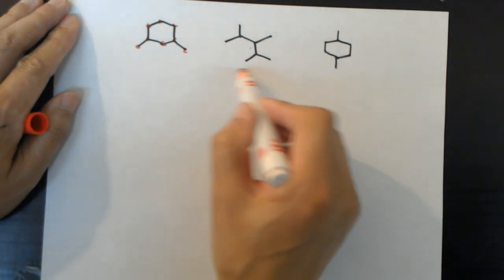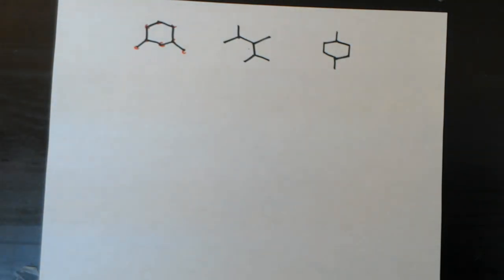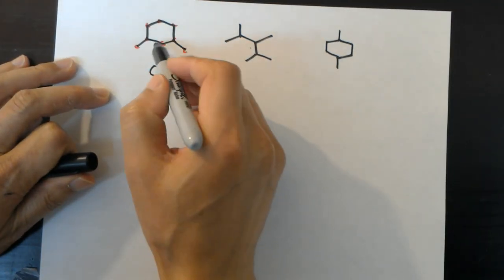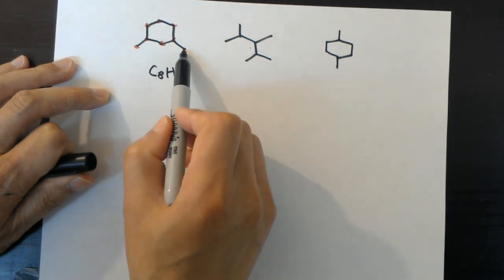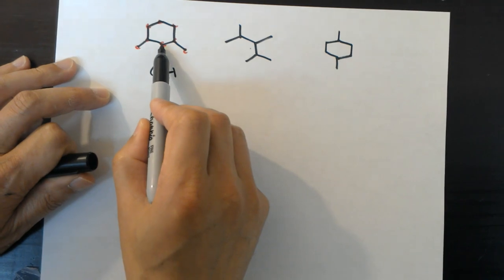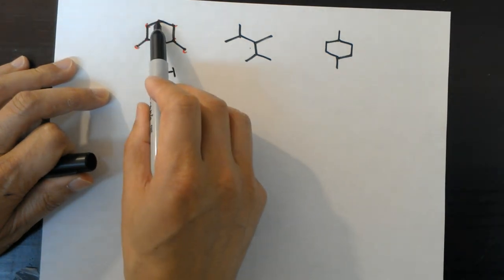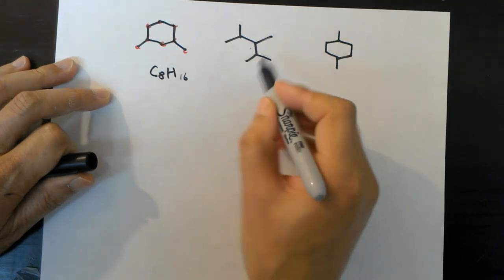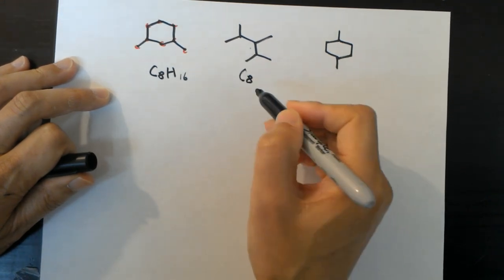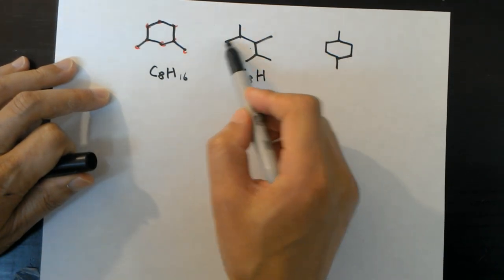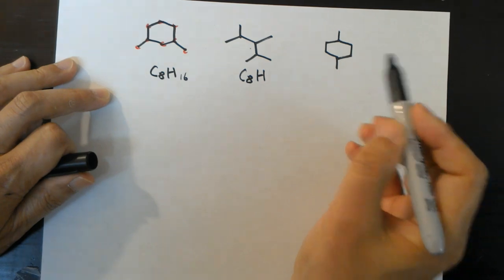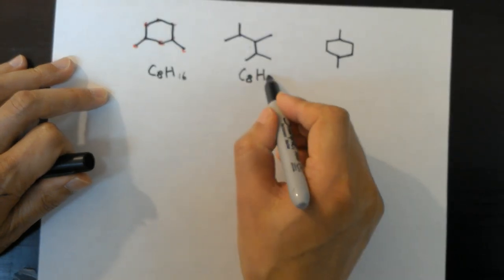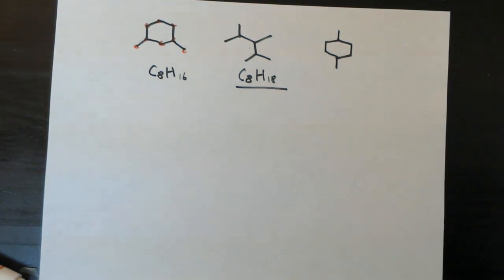When you compare those two structures to a third one, it's not as easy, so you actually have to work out the molecular formula. Counting out the carbons: C₈. Then the hydrogens: the terminal CH₃ groups contribute three each, the CH₂ groups two each. Adding them up carefully gives, for the chain compound, two more hydrogens than for the ring compound.